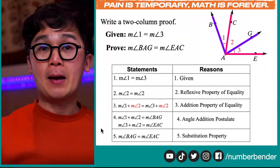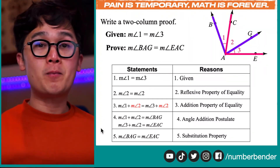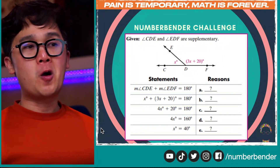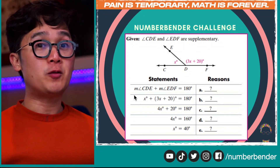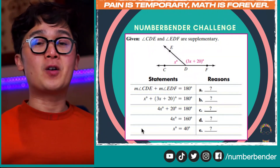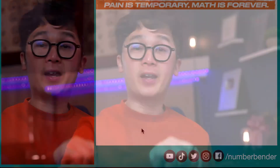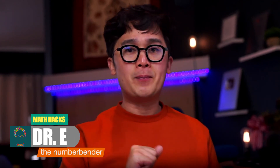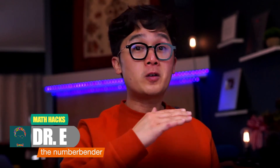That is what you're going to be working on in the number bender challenge of the day: showing the reasons from step 1 all the way to line 5 using the geometry properties from our previous example. When working with problems involving proofs in geometry, practice is essential. It's always going to be awkward and difficult at the beginning, but once you establish confidence through constant practice, it will be easy. This is Dr. E — see you next time, bye!